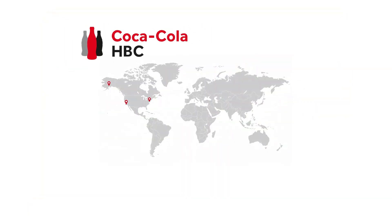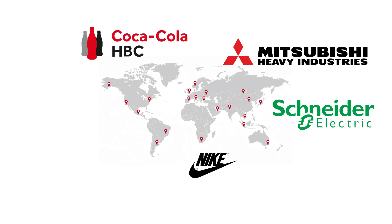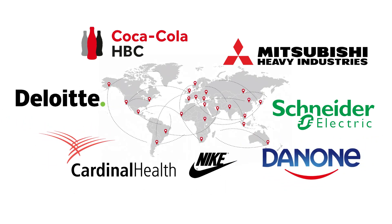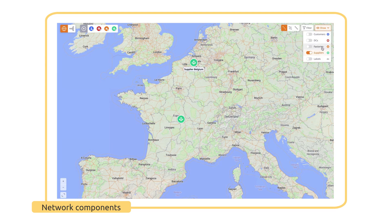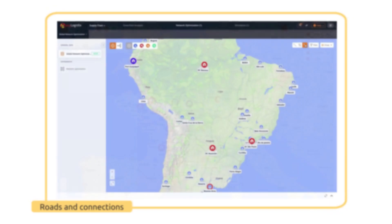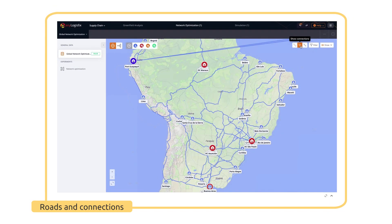Discover the reasons why hundreds of businesses have selected EniLogistics to manage and improve their supply chains. Visualize your network on a map and customize which elements to display. Easily connect customers, sites, factories, and suppliers via real-life roads.